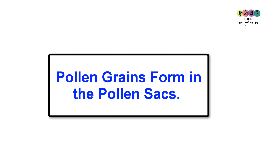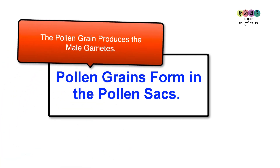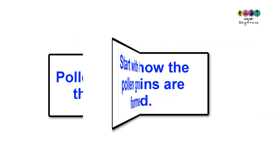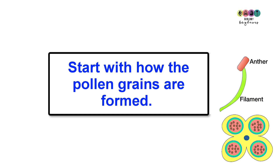Pollen grains are going to form in the pollen sacks, and it's the pollen grains that produce the male gametes — really important. So you always start with how the pollen grains are formed, going back to the anther, specifically to those pollen sacks.